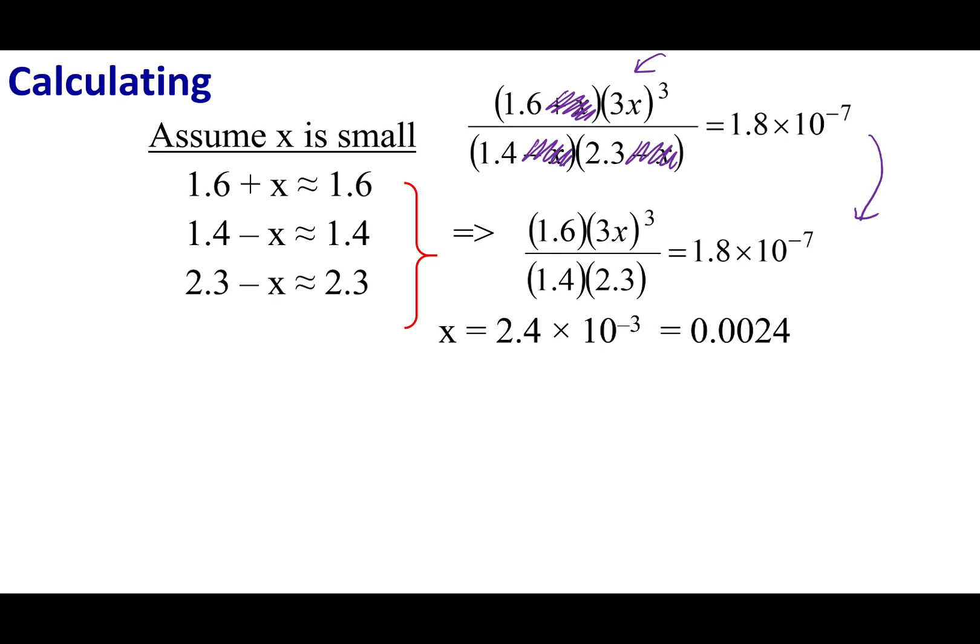This top equation becomes this bottom equation. I want you to be careful—don't remove all the x's. You still have to solve for x. Anytime there is a times x by itself or a 3x or 2x all by its lonesome, you cannot eliminate that. If I go ahead and do this, this equation right here is easily solvable and what I get is x is 2.4 times 10 to the negative third or 0.0024.